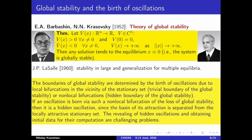This approach allows us to estimate in the space of parameters the domain corresponding to global stability. The boundaries of global stability are determined by the birth of oscillations due to local bifurcations in the vicinity of the stationary set — these are trivial parts of the boundary — or by non-local bifurcations, which are hidden parts. If an oscillation is born via such a non-local bifurcation, then it is a hidden oscillation. Since the basin of its attraction is separated from the locally attractive stationary set, the revealing of hidden oscillations is a challenging problem.